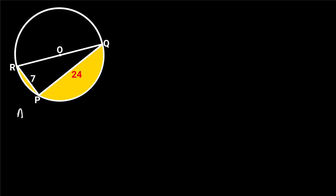The area of the shaded portion is equal to the area of the semicircle minus the area of triangle PQR. The area of the semicircle is equal to one-half pi times radius squared.